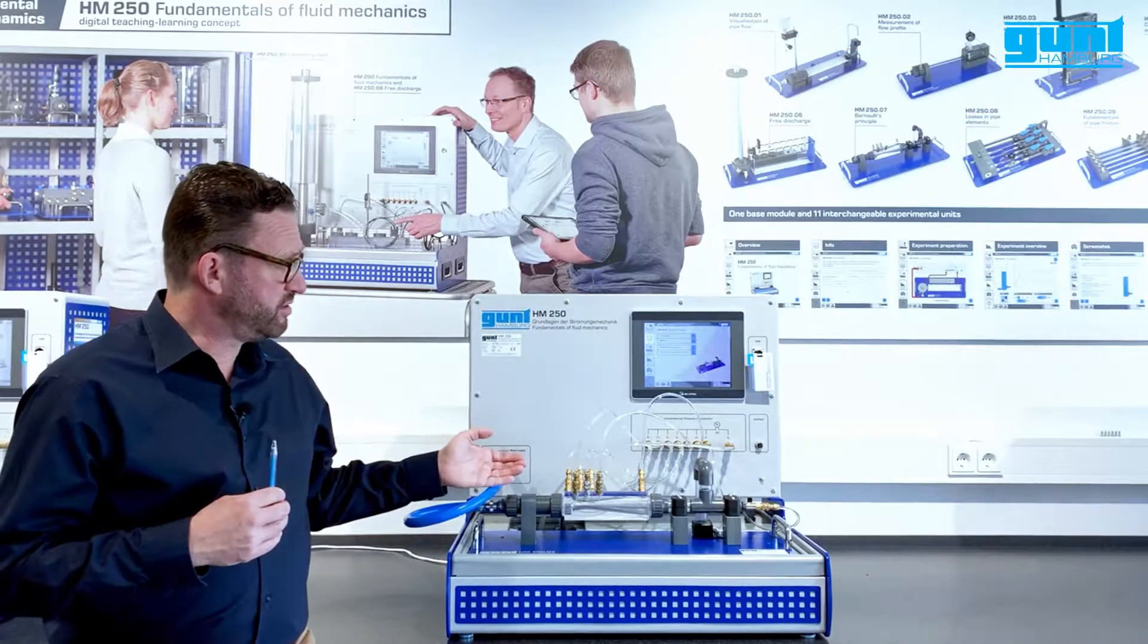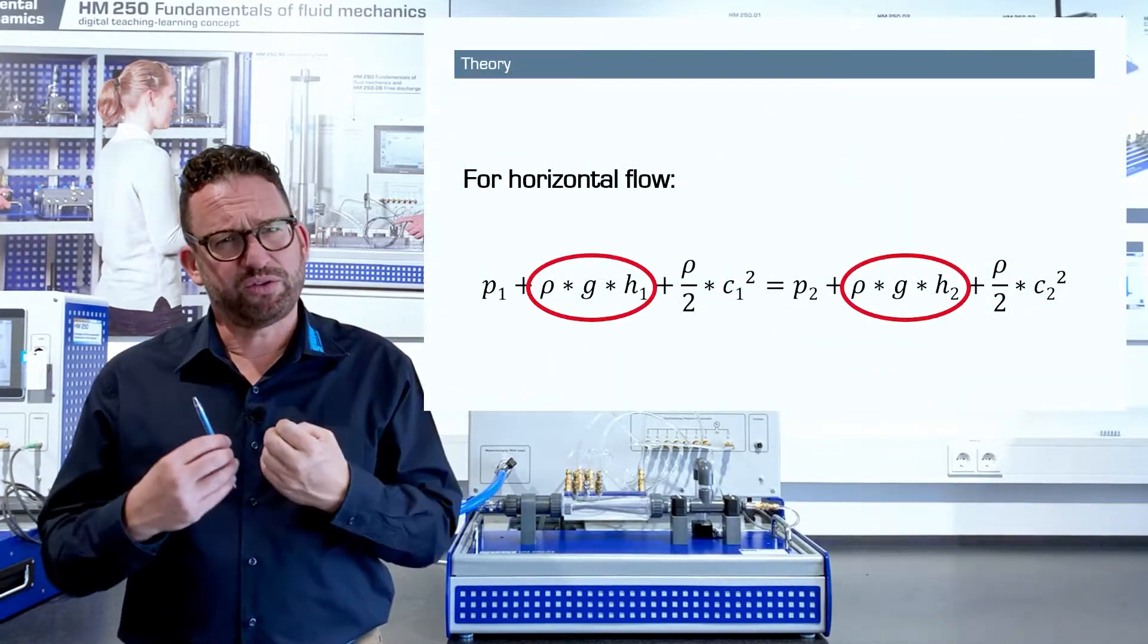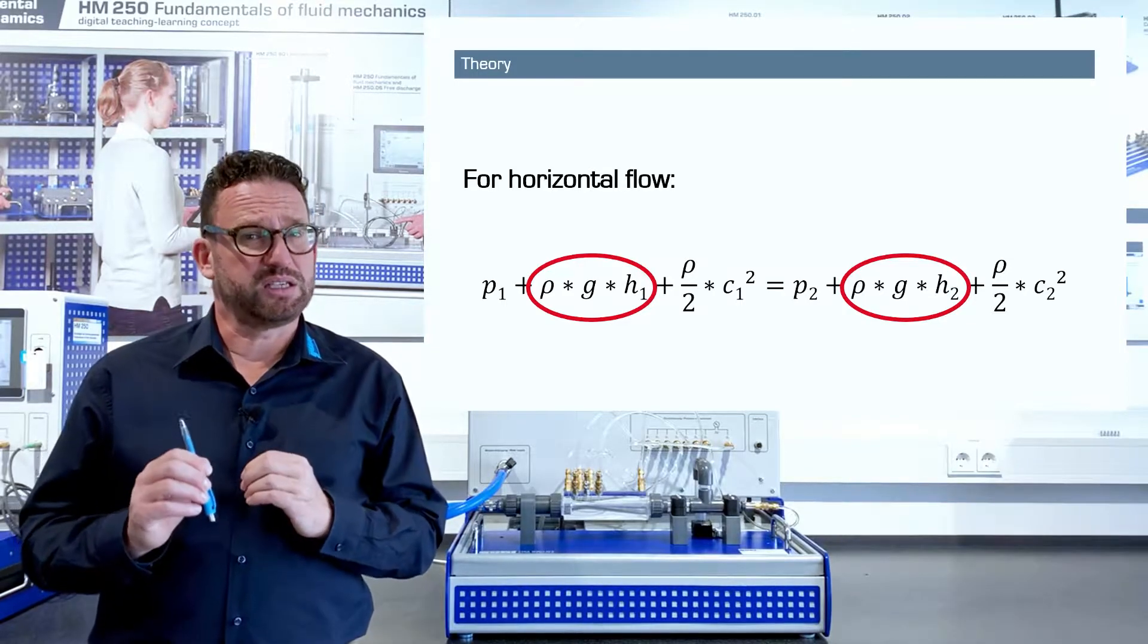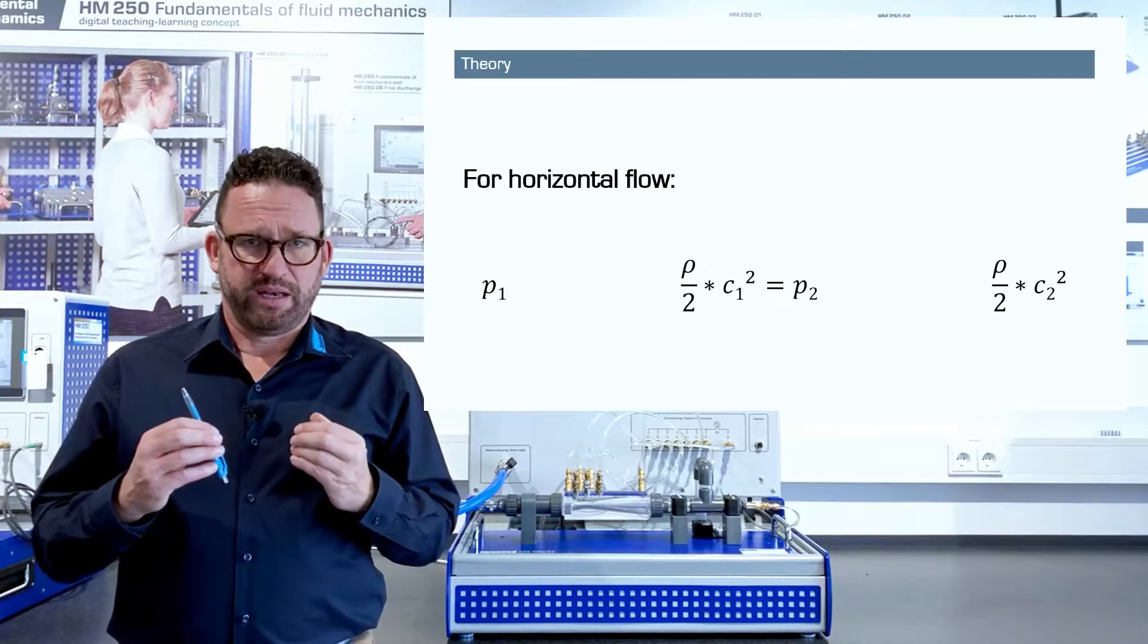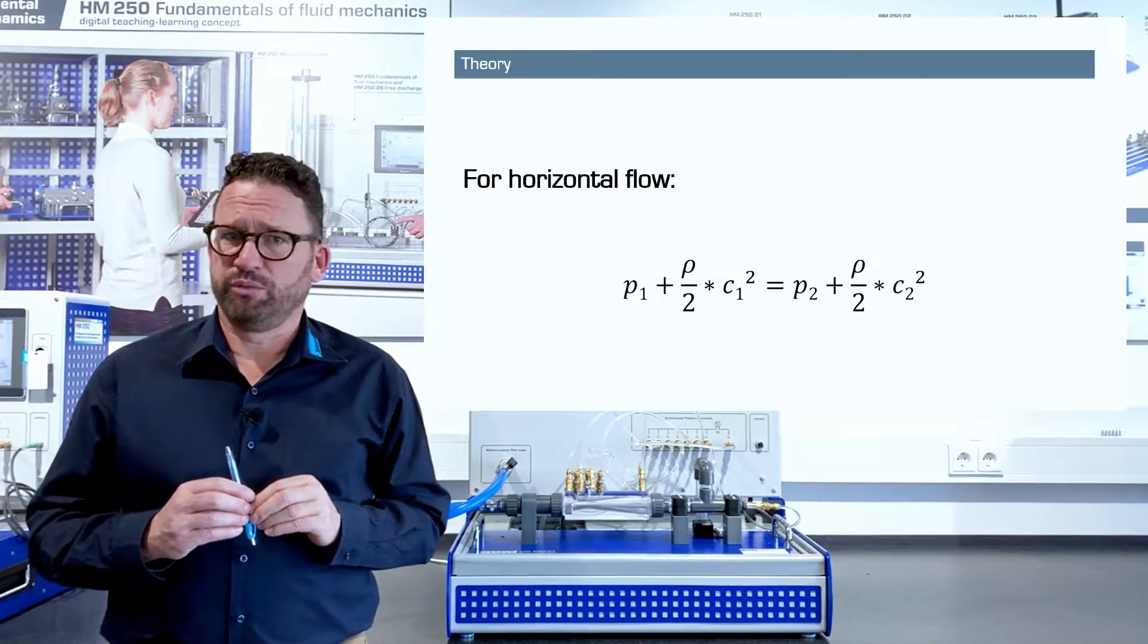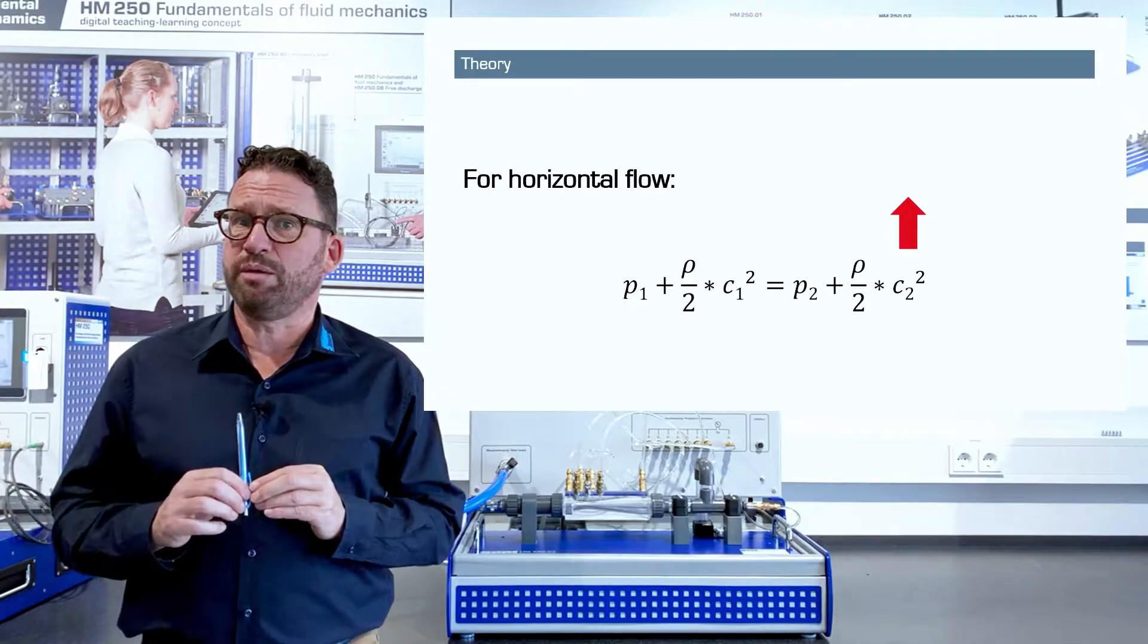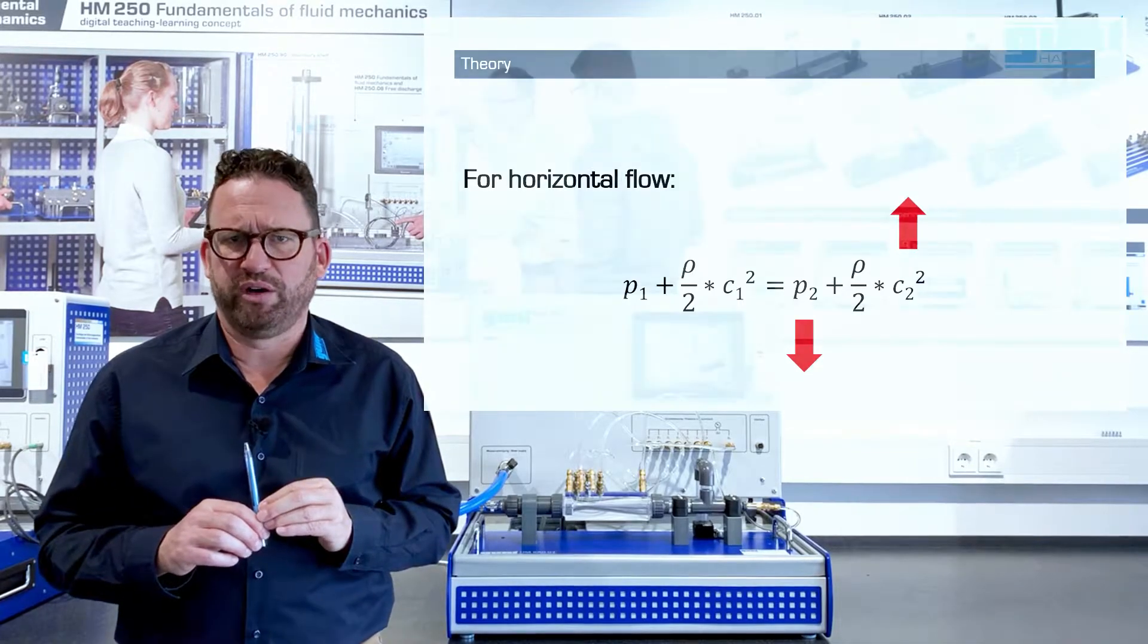Looking at our experiment, there is no height difference on either end of the venturi nozzle, so the hydrostatic pressures on either side of the Bernoulli equation are the same and can therefore be cancelled. Now the equation becomes a lot more simplified, and it becomes pretty obvious that when the velocity goes up, the pressure must come down. Let's see how that looks like in our experiment.